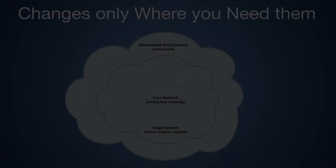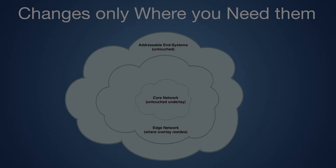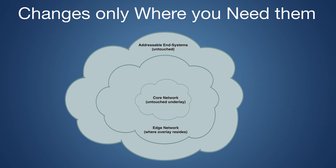These implementations were a combination of an open source implementation, write-your-own, and LISPERS.net. Architecturally, what we're trying to do is only put the changes in the network where they need to go. We don't want to change any of the end systems — their operating system or their protocol stack. They remain untouched. We also don't want to touch the core network. The core network could be an enterprise core network, a data center spine architecture, or the Internet. What we want to do is put the LISP overlay at the edges of the network, as close as possible to these end systems.